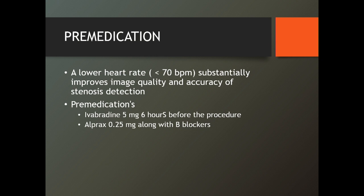If you have a heart rate around 70 or less, the picture quality is amazing, and your positive and negative predictive values are both extremely high. Different people use different agents — some use beta-blocker 50 to 100 mg, some use ivabradine 5 mg. We use standard ivabradine 5 mg: 5 mg the previous night at bedtime and 5 mg two hours before the study, or one ivabradine 5 mg six hours before. But to all our patients, we also give 0.25 mg restyl. It works magic — you get excellent quality pictures.